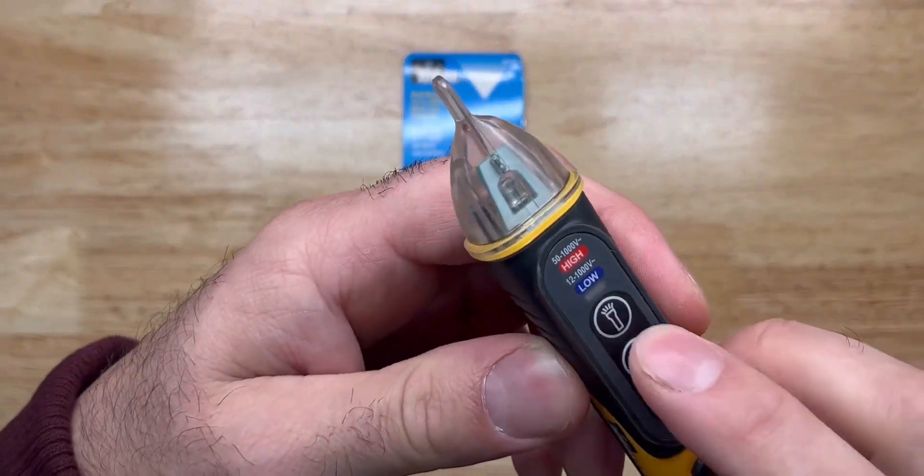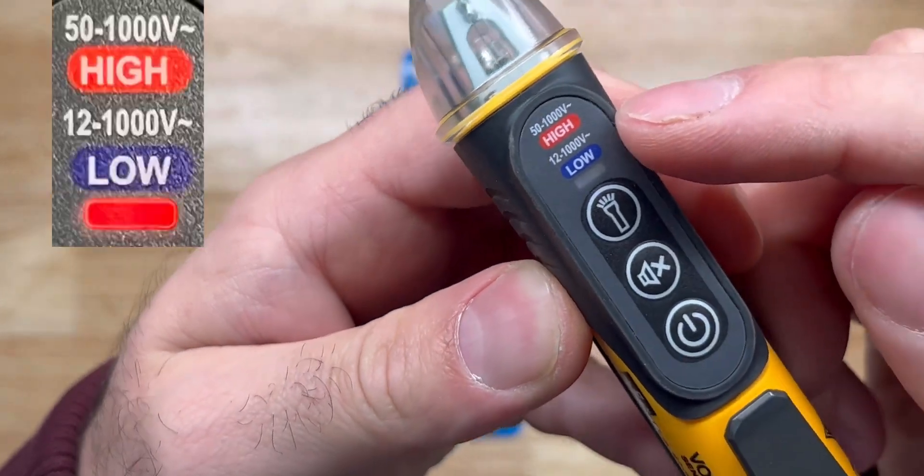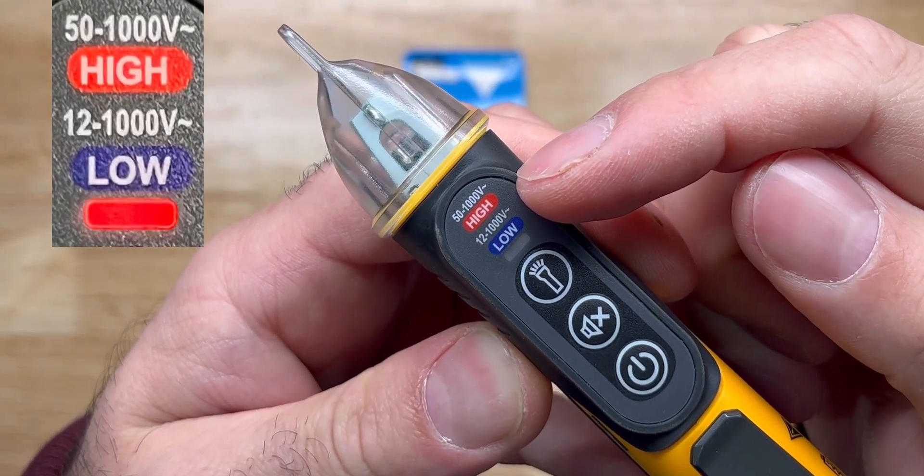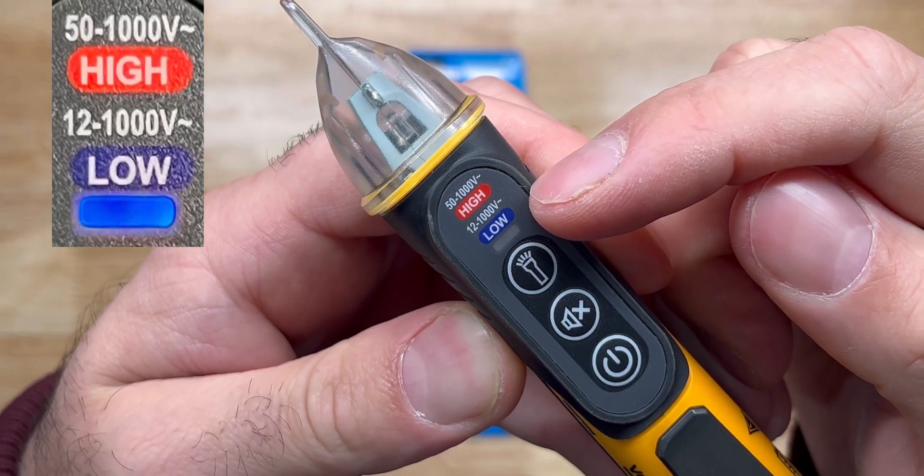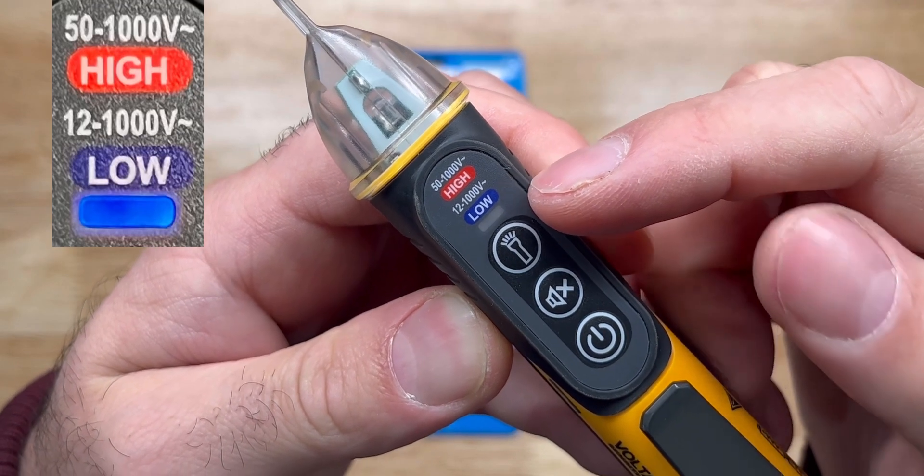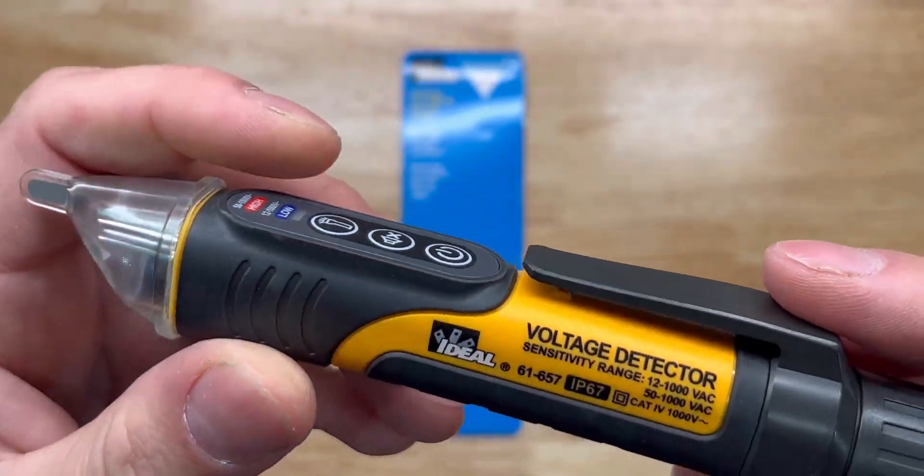Shutting off the flashlight, there is a high 50 to 1000 volts and then the low is 12 to 1000 volts. It's a pretty nice range there.